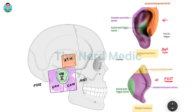Finally, if you focus on the superior portion of the pinna from the posterior aspect, you will see that the lesser occipital nerve supplies it. In our image, the lesser occipital nerve supplies the superior aspect of the posterior half of the pinna.